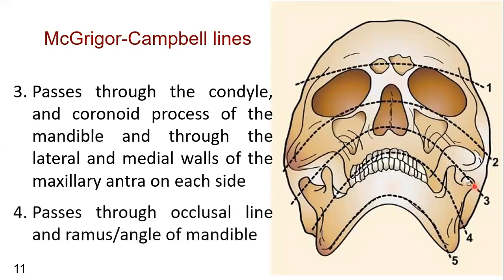The fourth line passes through the right angle of the mandible, then the line of the occlusal plane, and the left angle of the mandible. The fifth line is the Trepnel line, indicating it is present on the lower border or inferior border of the mandible. Any fracture or abnormality in this region can be interpreted by the Trepnel line.